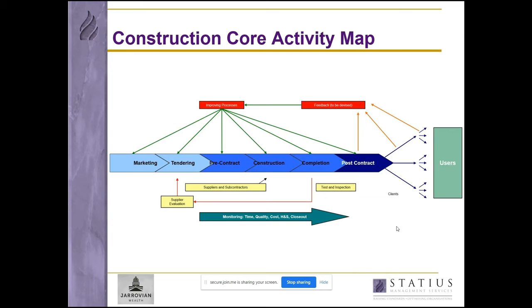In the first example we started with marketing and tendering, moved on to pre-contract and construction — which is often the only bit the company gets paid for — followed by completion and post-contract activities. Essentially we're taking a cut through the traditional organizational family tree, thinking about processes that deliver value to the customer rather than those responsible for our development.